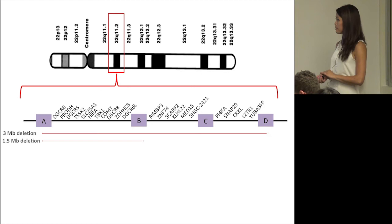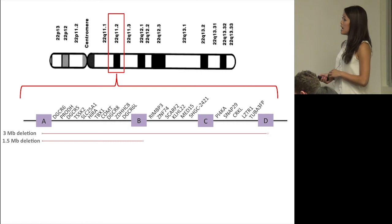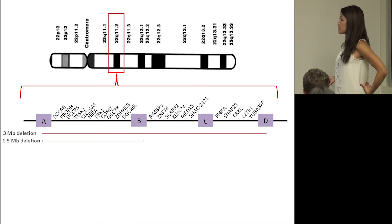Here I'm giving a rough schematic of chromosome 22 and the 22q11.2 region. Here is the common 3 megabase deletion and the nested 1.5 megabase deletion.